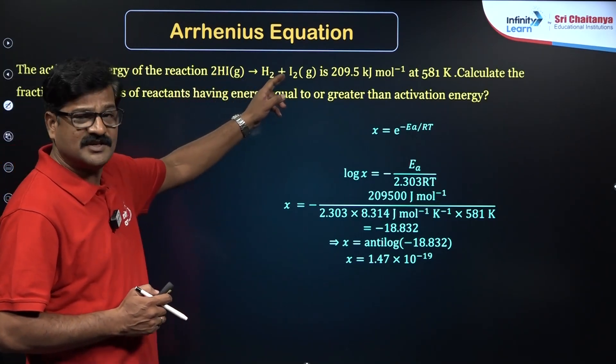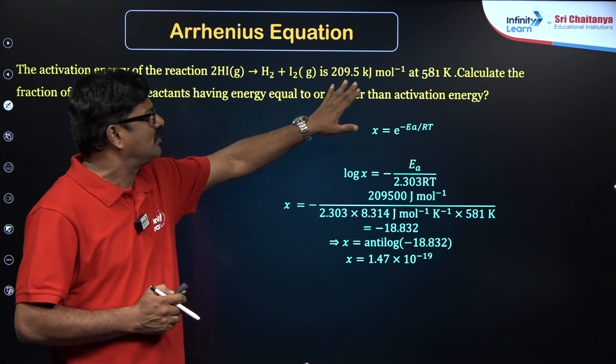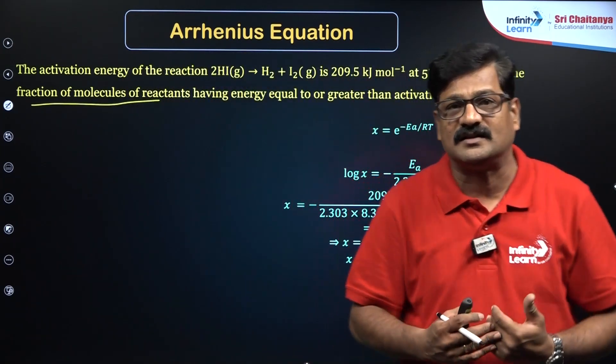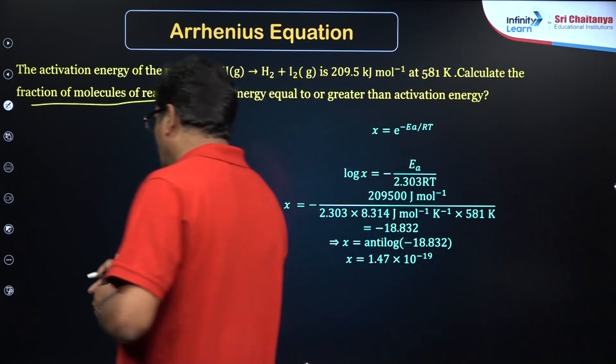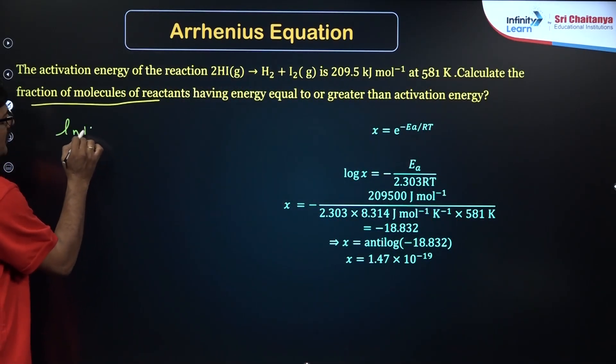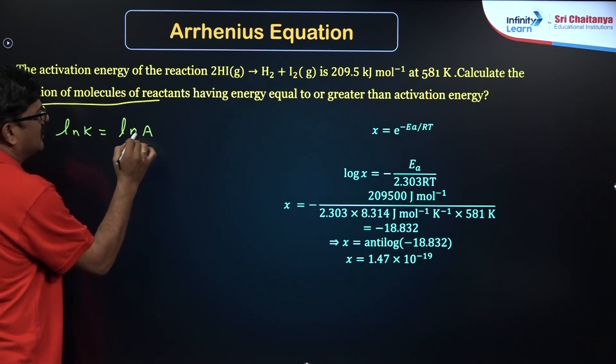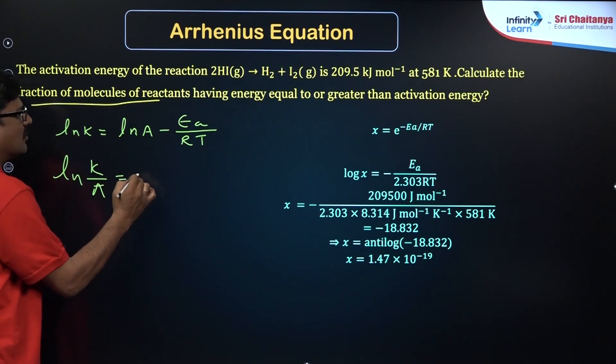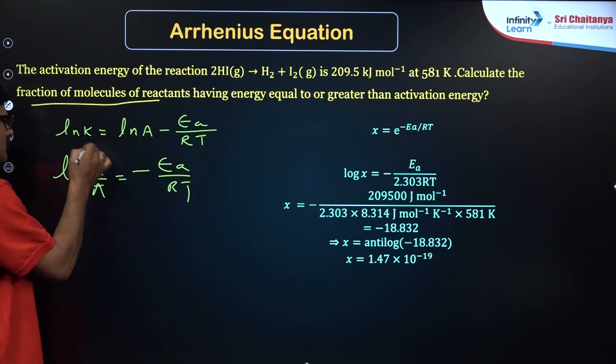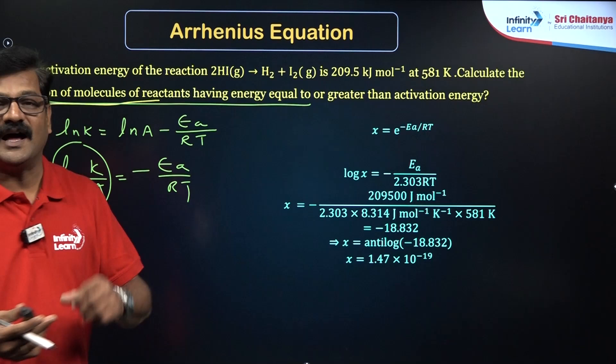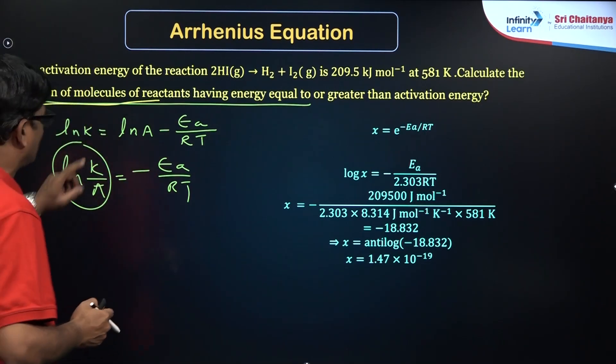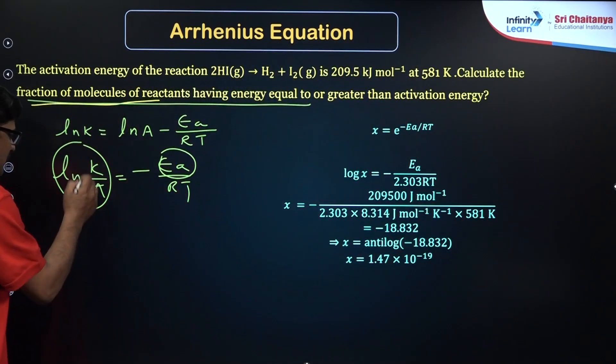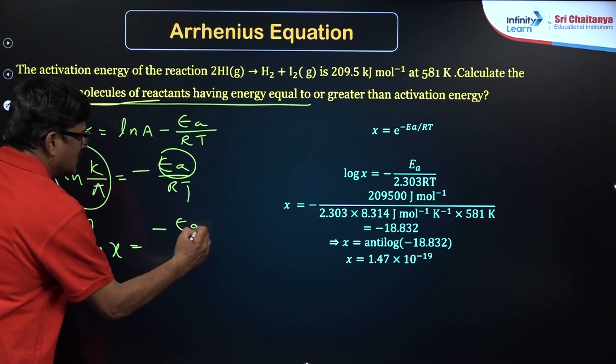The activation energy of the reaction 2HI → H2 + I2 is 209.5 kJ/mol at 581 K. Calculate the fraction of molecules of reactants having equal or greater than the activation energy. That is very important. We know that ln k = ln A - Ea/RT. So ln(k/A) = -Ea/RT. This ratio, k/A, is the fraction. So k/A is a fraction, that fraction of molecules equal or greater than activation energy. So ln x = -Ea/RT.